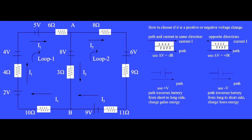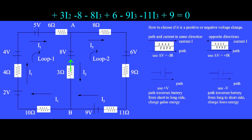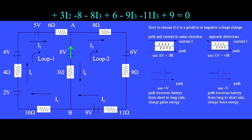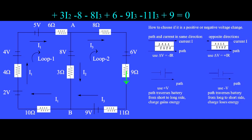We next write the conservation of energy for loop 2, starting and ending at point B. The path first goes through the 3 ohm resistor. Since the direction of the path and the direction of the current I2 point in opposite directions, we write plus IR, or plus 3I2, as the energy change in this resistor. The path next goes the wrong way, from long to short sides of the 8 volt battery, so we write minus 8 volts. Continuing all the way around the loop gives minus 8I3, plus 6, minus 9I3, minus 11I3, plus 9 equals 0, for the conservation of energy in loop 2.